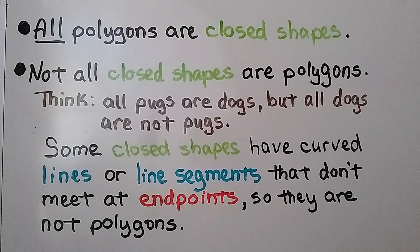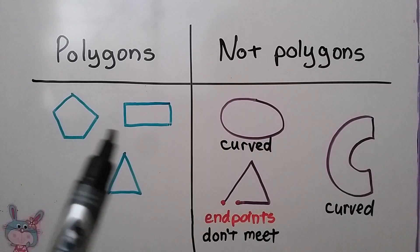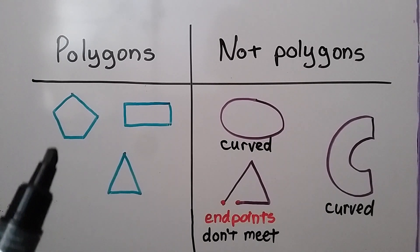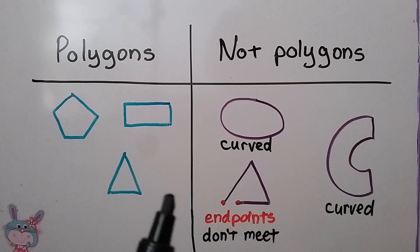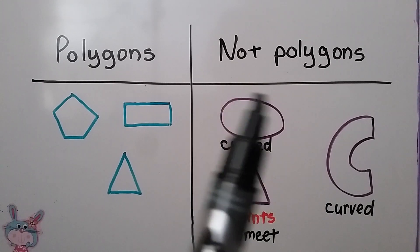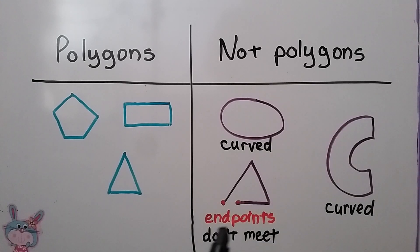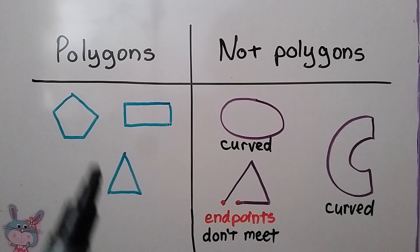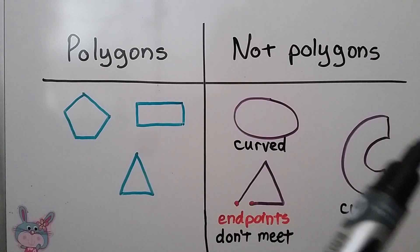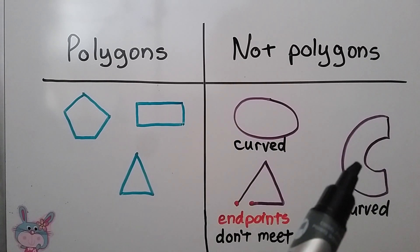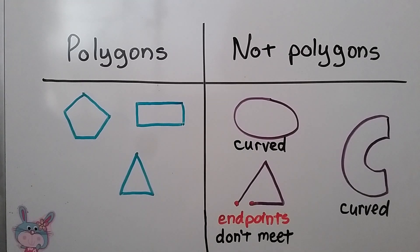These are polygons — they're closed shapes and they have line segments. These are not polygons: this one has a curved line, this one has a curved line, and look, these endpoints don't meet so it's open. These are closed shapes but they're not polygons, which is why not all closed shapes are polygons.